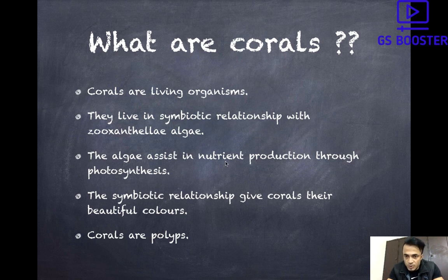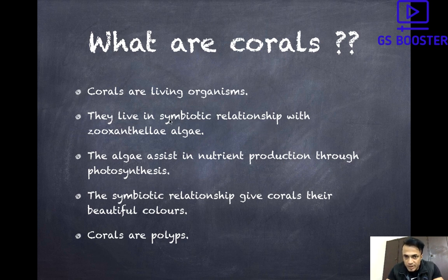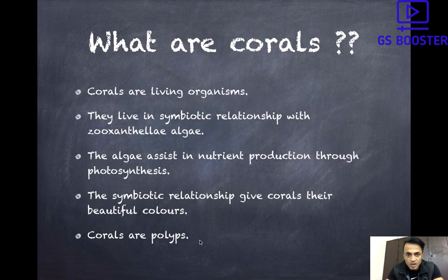These algae assist in nutrient production through photosynthesis, and the symbiotic relationship gives corals their beautiful colors. The color of corals is basically due to the algae. Due to global warming and rising ocean temperatures, this symbiotic relationship breaks down, the algae leave, and the corals become white in color. That is the reason why it is said that climate change is leading to coral bleaching. Corals belong to the animal kingdom as invertebrates, classified alongside arthropods and mollusks.